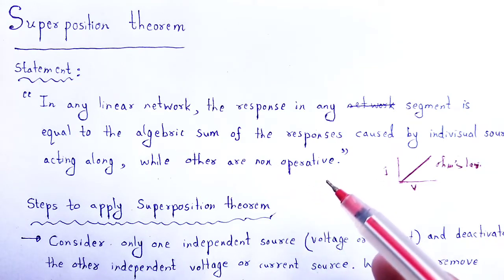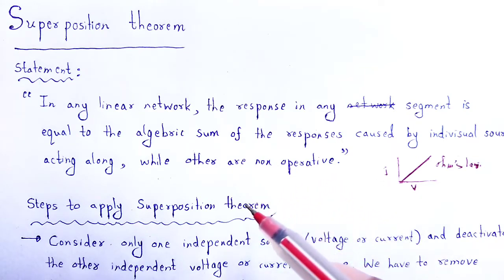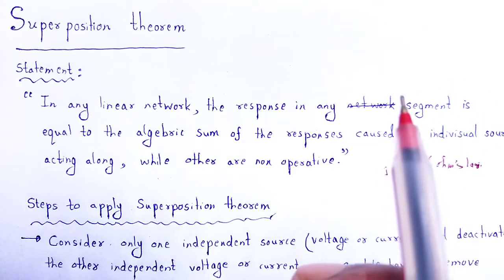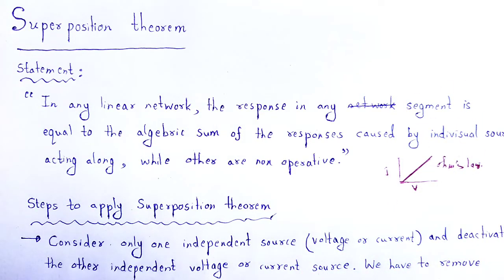Here, ideal voltage sources and ideal current sources in the network are replaced by short circuit and open circuit across their terminals. If a number of voltage or current sources are acting simultaneously in a linear network, the resultant current in any element is the algebraic sum of the currents produced when each source acts independently, replacing all other independent sources by their internal resistances.